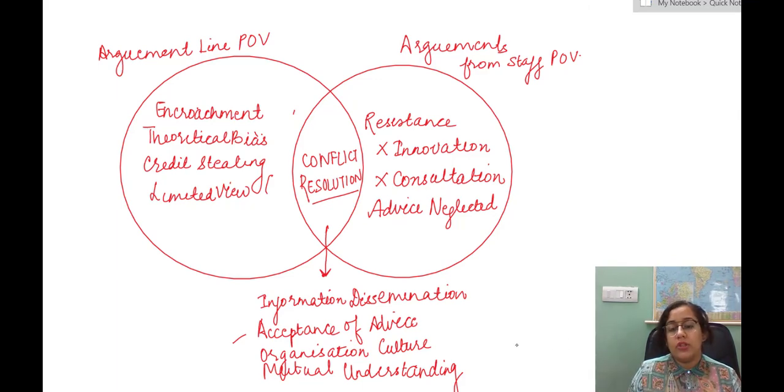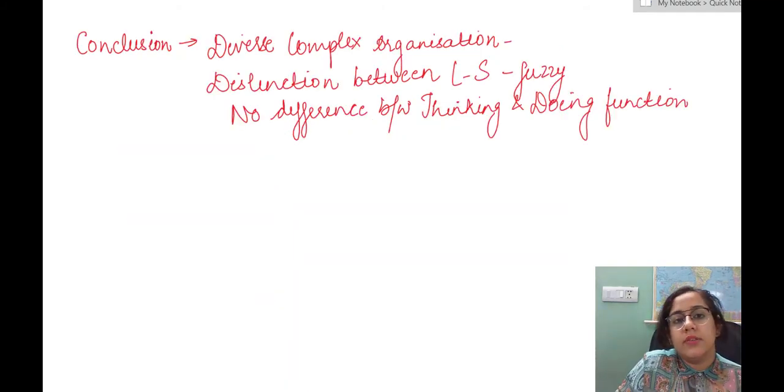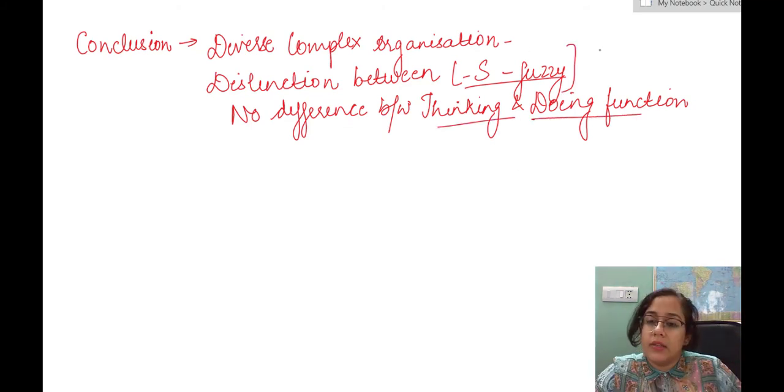So in the conclusion, you can write that since we are now moving towards more number of MNCs, multinational companies, which are situated in more than one country, we see that their operations have become very diverse and complex. Therefore, the distinction between the line and staff function has really become fuzzy and there is no difference between the thinking and the doing functions and in the current scenario, we would be witnessing resolution in terms of mitigation of the distinction between the line and staff function. I hope this makes the concept clear.